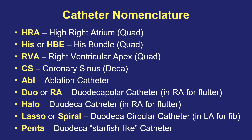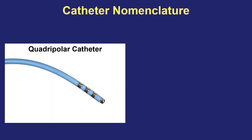LASSO or SPIRAL refers to a smaller circular catheter, usually with 10 or 20 electrodes, positioned inside a vein — usually a pulmonary vein in the left atrium during AFib ablations, or sometimes in the superior vena cava. PENTA stands for PENTA-ray, a five-pronged starfish-like catheter with 20 electrodes used in various chambers when you want to record multiple bipoles simultaneously. There is a consistent electrode numbering convention starting from the distal end of the catheter working backwards: the distal electrode is always number one.